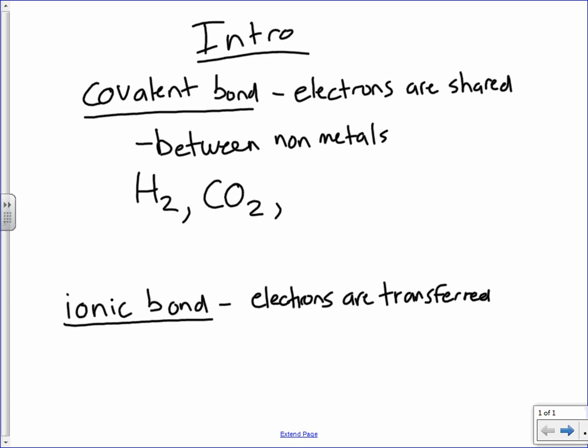CO2, carbon dioxide. Carbon and oxygen are both non-metals. We've got CH4, methane. And let's do glucose, C6, H12, O6. So these are all covalent compounds formed by covalent bonds.